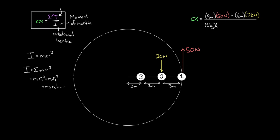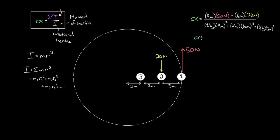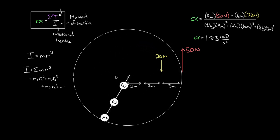Plugging everything into the calculator, the angular acceleration alpha comes out to 1.83 radians per second squared. That's the rate at which this object would start accelerating. If it started from rest, it would begin speeding up in the counterclockwise direction, and keep speeding up if these forces maintained their torques.